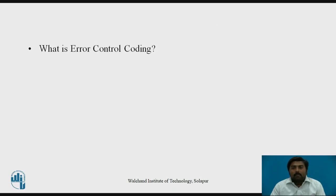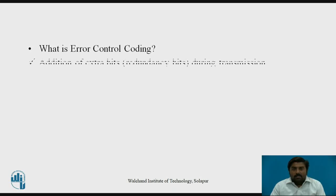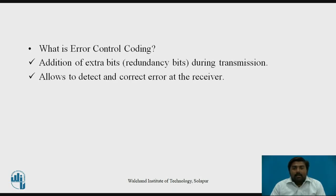Before starting the actual session, let's think about what error control coding is. It means that while transmitting data from sender to receiver, some extra bits — redundancy bits — are added to the data. At the receiver side, this allows detection and correction of errors that occurred during transmission in the data words.